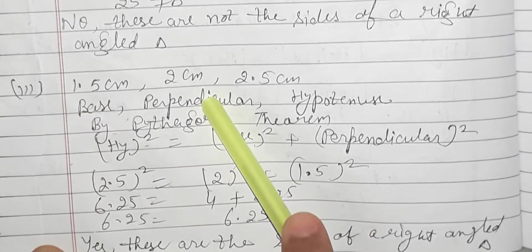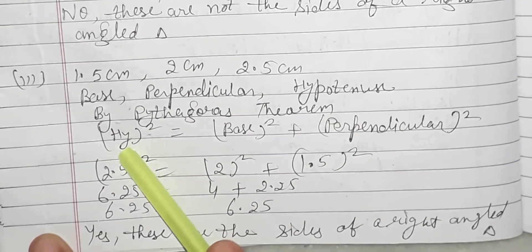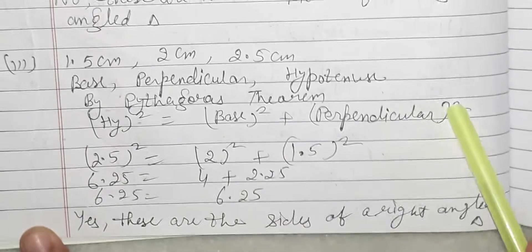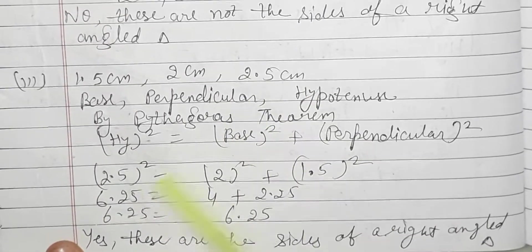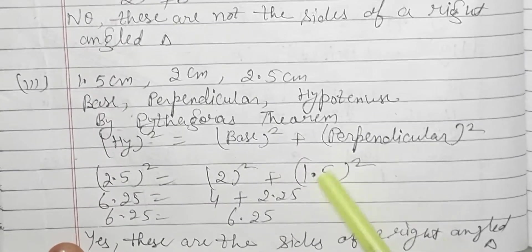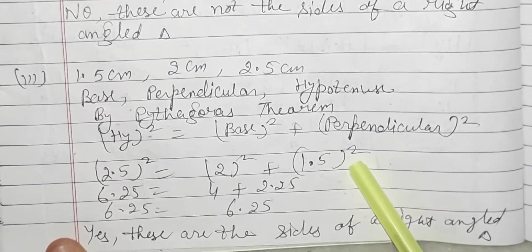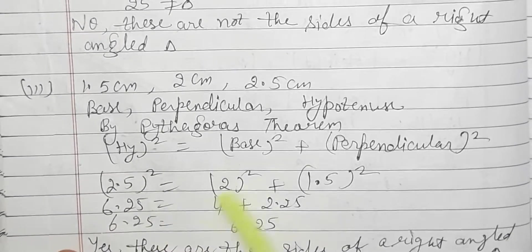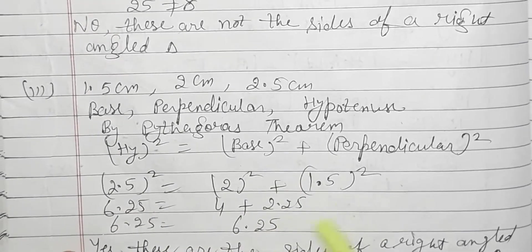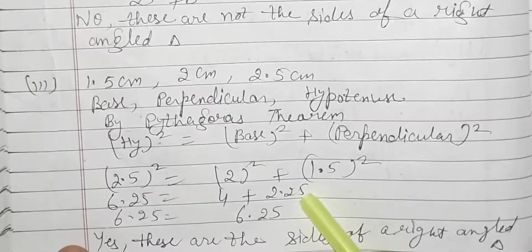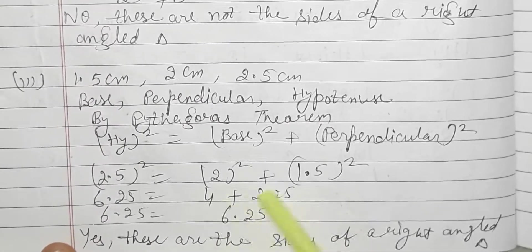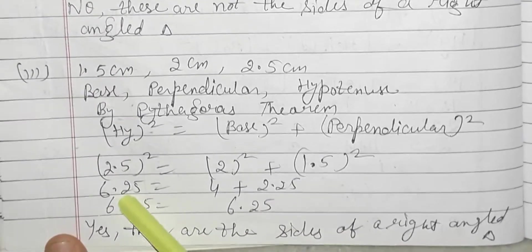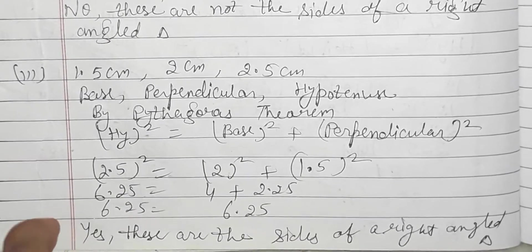Part (c): 1.5 cm, 2 cm, and 2.5 cm. Here 2.5 is the longest, so I take it as hypotenuse; the rest are base and perpendicular. By Pythagoras theorem: 2.5² = 2² + 1.5². So 2.5 × 2.5 = 6.25, 2 × 2 = 4, and 1.5 × 1.5 = 2.25.